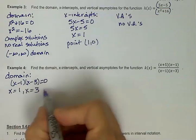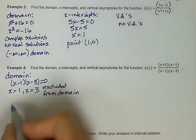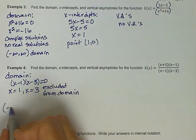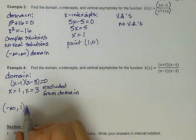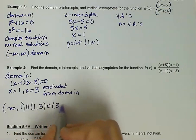Both of these have to be excluded from the domain. If we want to write our domain in interval notation, we would have three intervals. From negative infinity to 1, from 1 to 3, and from 3 to infinity.